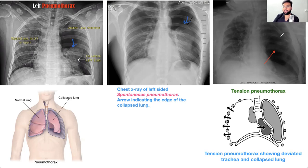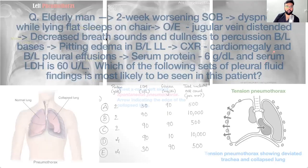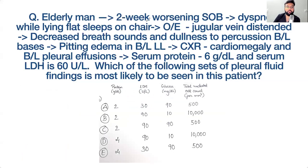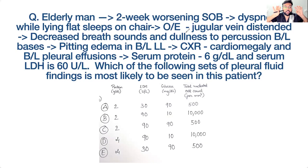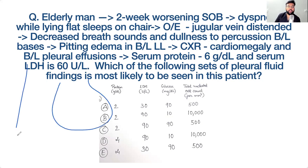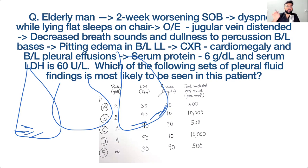An elderly man presents with two weeks of shortness of breath and orthopnea — he sleeps on a chair. On examination there is jugular venous distension, decreased breath sounds with dullness to percussion at bilateral lung bases, and pitting edema in bilateral lower limbs. Chest X-ray shows cardiomegaly and bilateral pleural effusion. Auscultation reveals crepitations at bilateral lung bases.